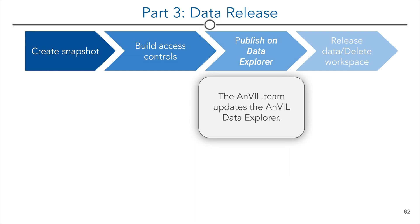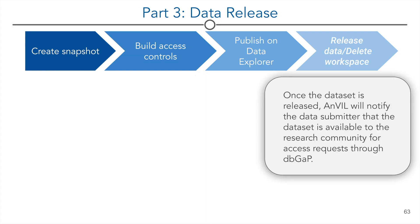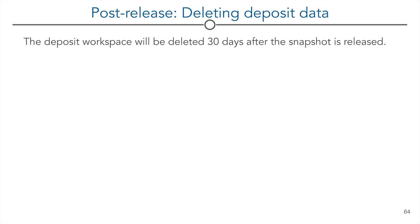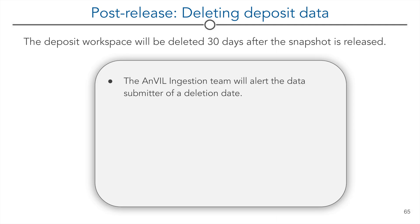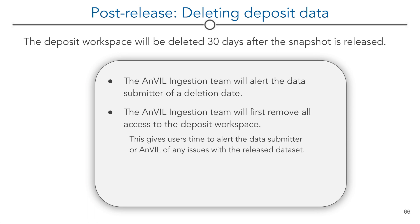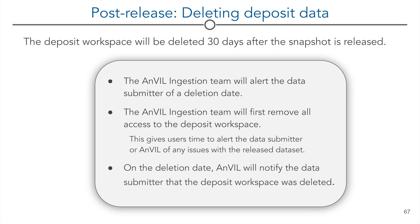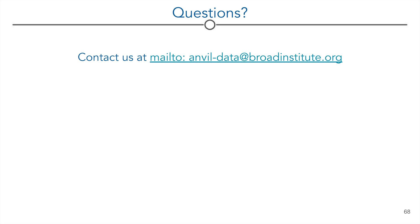The dataset will appear on the Anvil data explorer. Once the dataset is released, Anvil will notify the data submitter that the dataset is available to the research community for access requests through dbGaP. The deposit workspace will then be deleted 30 days after the release. The Anvil ingestion team will alert the data submitter of a deletion date. The Anvil ingestion team will first remove all access to the deposit workspace upon data release, to allow time for users to alert the data submitter or Anvil of any issues with the release dataset. On the deletion date, Anvil will notify the data submitter that the deposit workspace was deleted. This wraps up the presentation. If you have any questions, please reach out to the Anvil team at anvildata@broadinstitute.org.